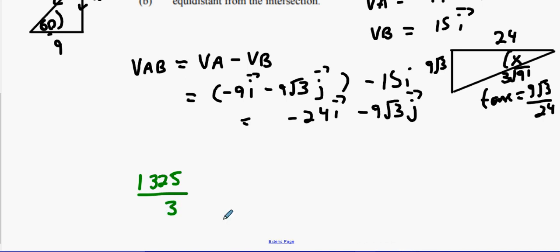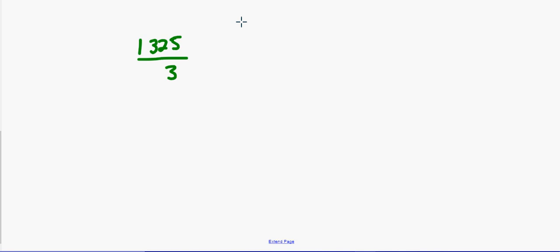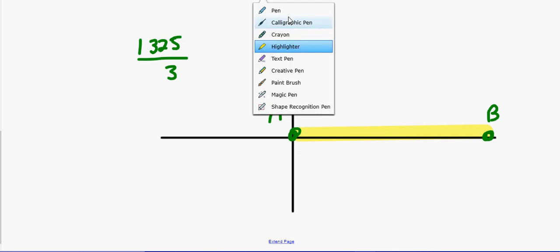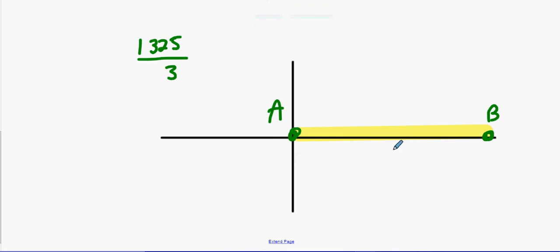Let's recap where we are right now. What has actually happened? Who's at the junction? A. B is off into the distance. What's the distance between both cars? 1325 over 3. Great round number isn't it?